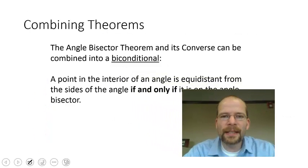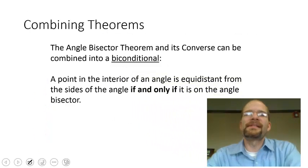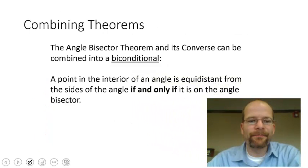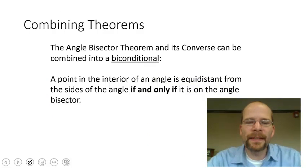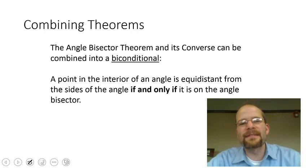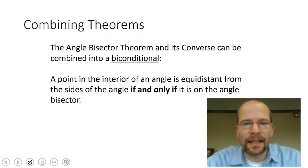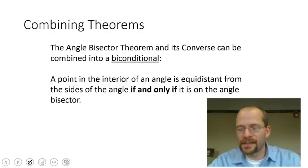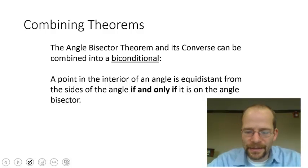We can combine the angle bisector theorem and its converse into a biconditional: a point in the interior of an angle is equidistant from the sides of the angle if and only if it is on the angle bisector.